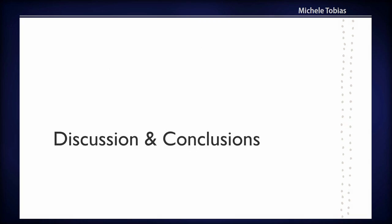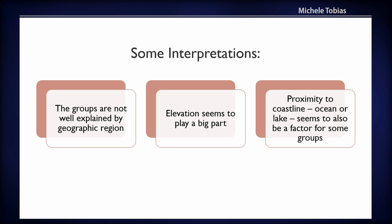Some conclusions: the groups were not explained very well by geographic region — they didn't group up by region the way I thought they would, which was a big surprise. Elevation seems to play a big role, especially with the coastal group, which are all really low elevation, and there's probably some correlation there. Also, proximity to coastline seems to be a really important factor in informing some of the groups.